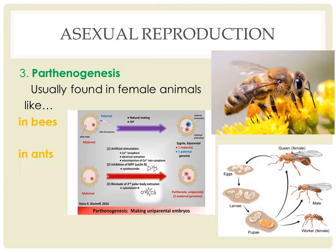In parthenogenesis, the growth and development of embryos occur without fertilization by a male. Parthenogenesis occurs naturally in some invertebrates like the species of wasps, bees, and ants.